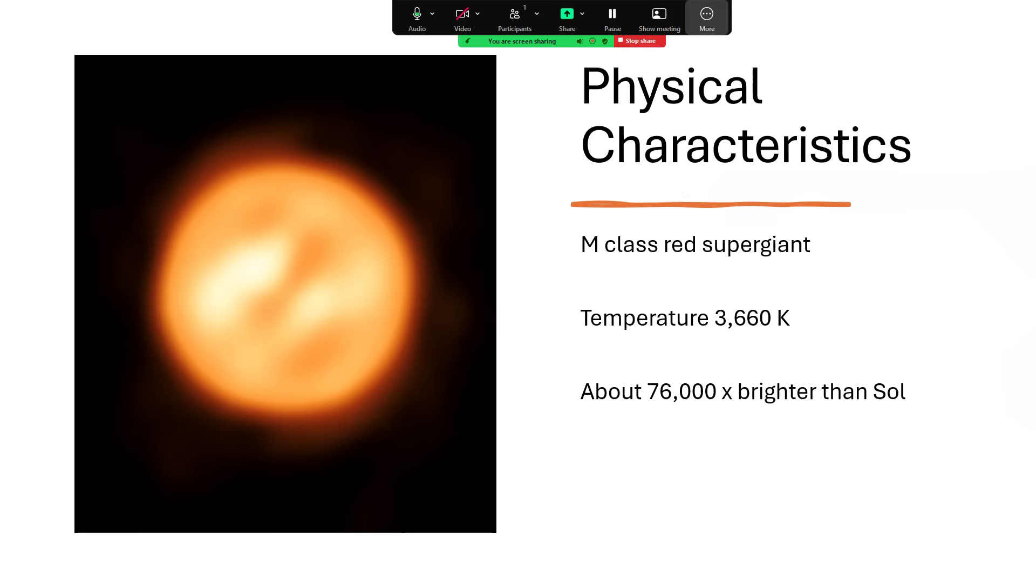But we can get an image of the surface. This is an actual image rather than an artist's impression of the surface of this red supergiant star. Temperature 3660 Kelvin and estimated to be about 76,000 times brighter than our sun.